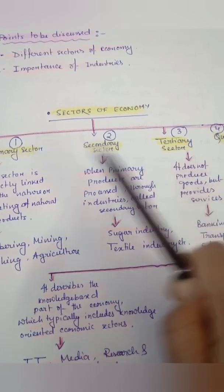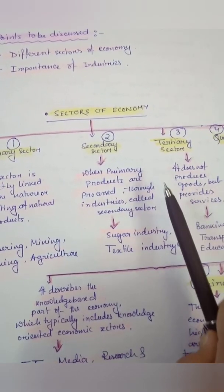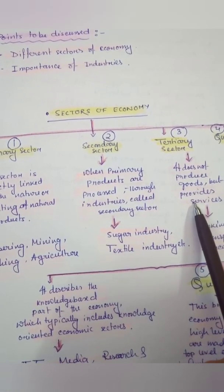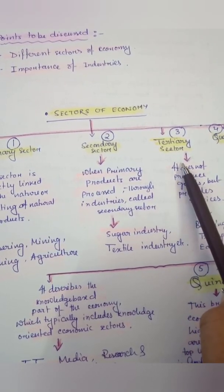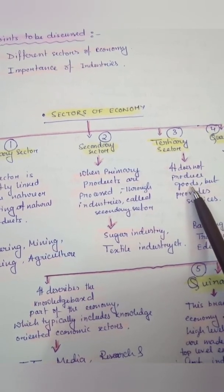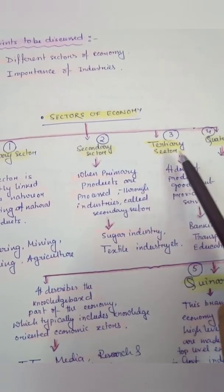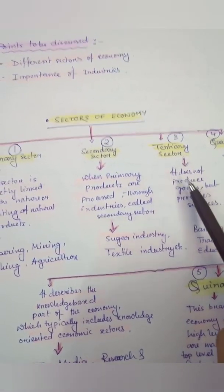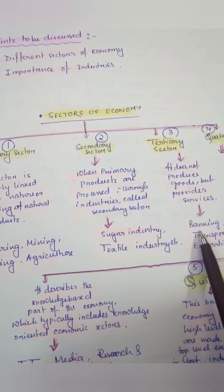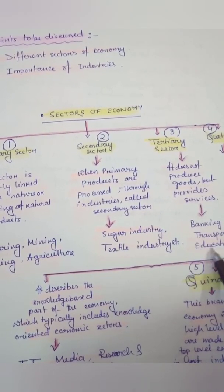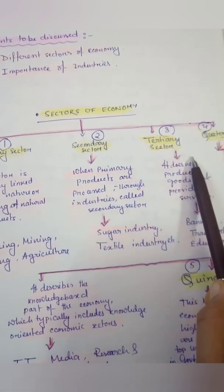Number three is the tertiary sector. In the primary and secondary sectors we get goods and products, but the tertiary sector does not provide goods — it provides services. These services include banking, hospitalization, transportation, and education. Always remember that if the tertiary sector is upgraded, the other sectors will also develop, because if banking, transportation, and education are available, we can use these facilities to develop the secondary and primary sectors.